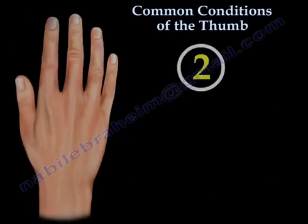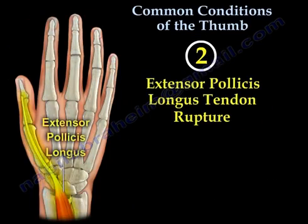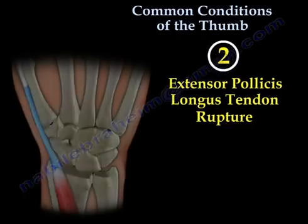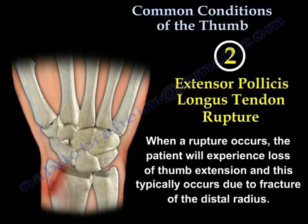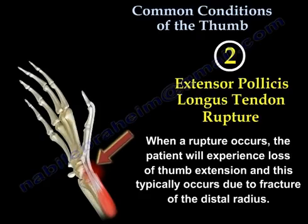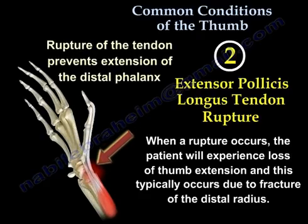Another condition is called extensor pollicis longus tendon rupture. The tendon is responsible for extension of the thumb, especially the distal interphalangeal joint. It occurs usually with fractures of the distal radius that are not displaced, and when it happens, the patient will not be able to extend the thumb.